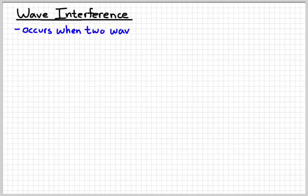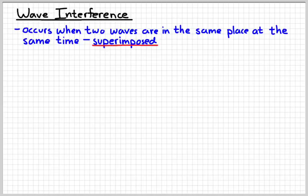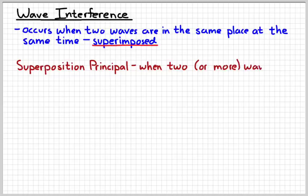Wave interference is a phenomenon that occurs when two waves are in the same place at the same time. A fancy word you can use to describe two waves in the same place at the same time is superimposed. If you ever put two images on top of each other, then they have been superimposed. So when two waves are superimposed, we can use the fancy term superposition principle to describe this idea.